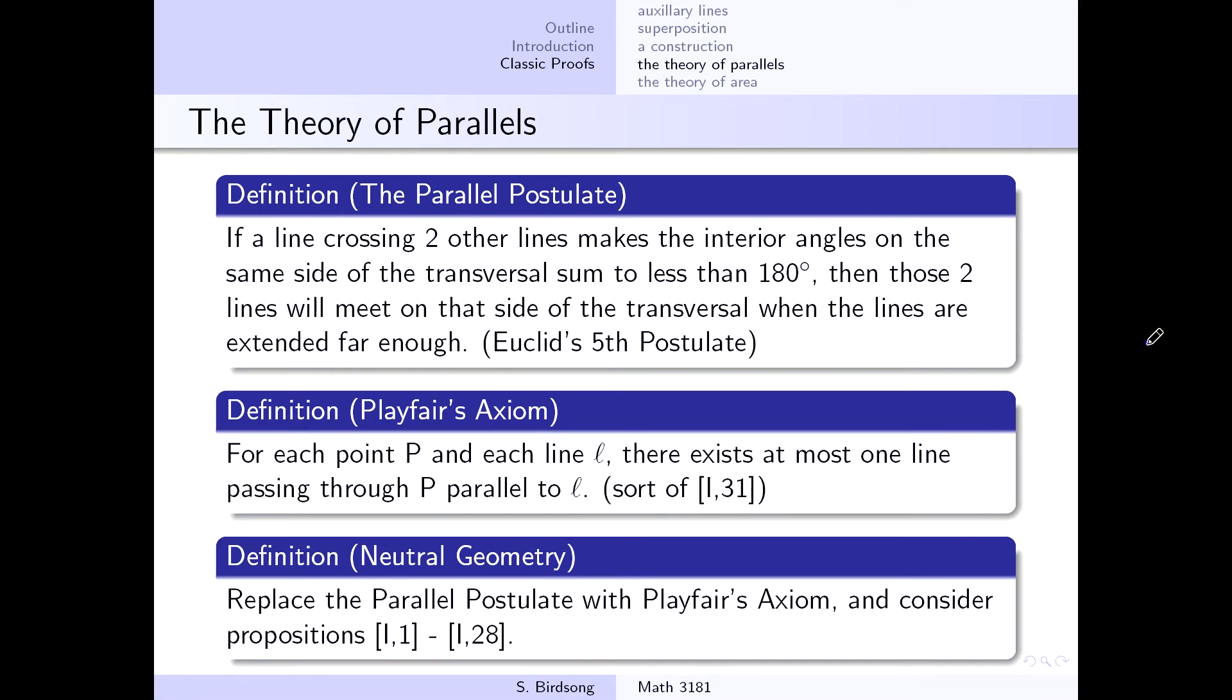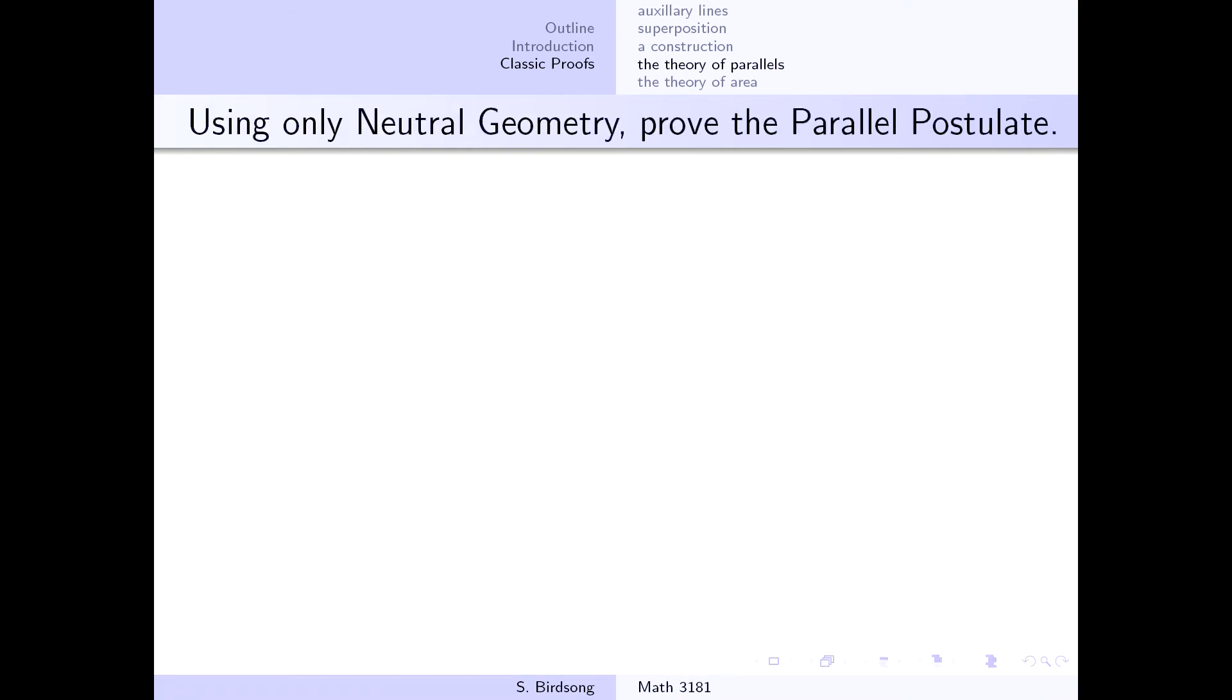We're not really going to use that at all right now. All right, so using only neutral geometry, we are going to try to prove the parallel postulate. So what this means is our conclusion is where we want to get to our parallel postulate or Euclid's fifth postulate,